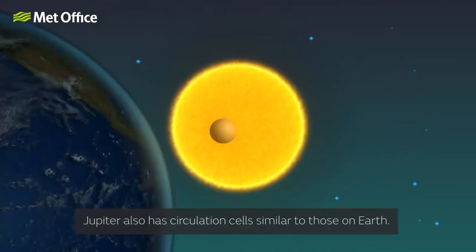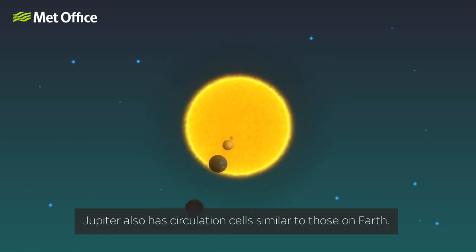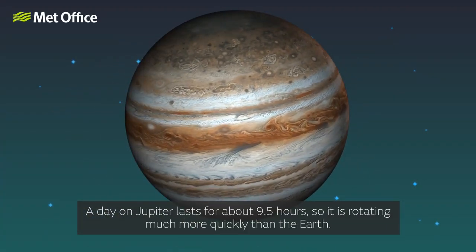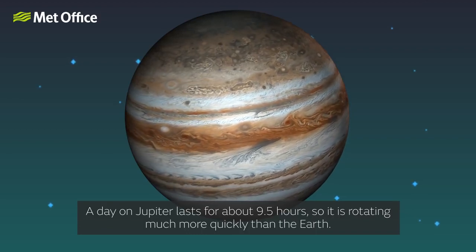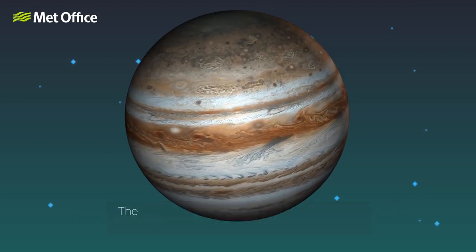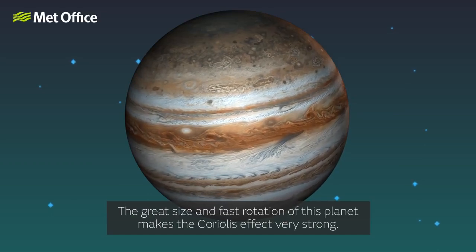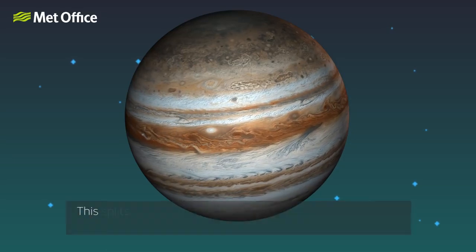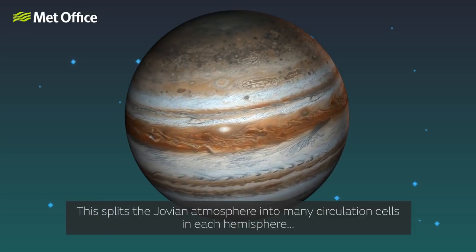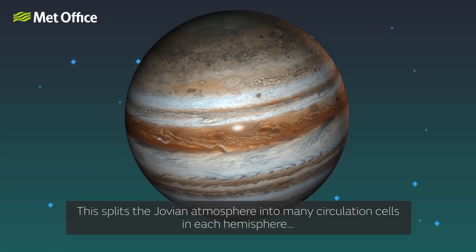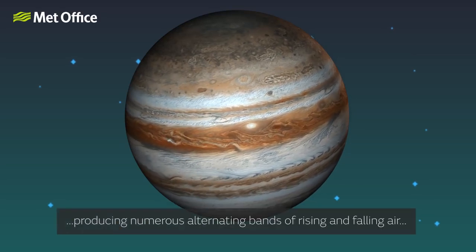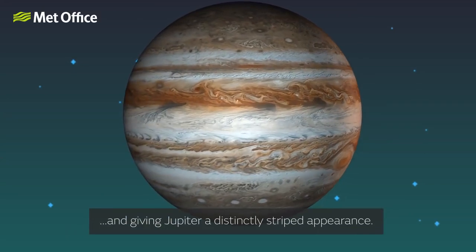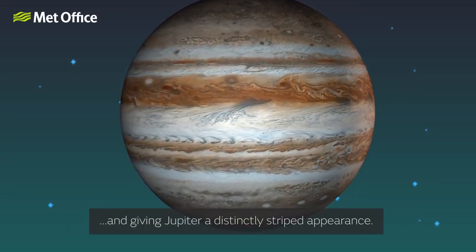Jupiter also has circulation cells similar to those on Earth. A day on Jupiter lasts for about nine and a half hours, so it is rotating much more quickly than the Earth. The great size and fast rotation of this planet makes the Coriolis effect very strong. This splits the atmosphere into many circulation cells in each hemisphere, producing numerous alternating bands of rising and falling air and giving Jupiter a distinctly striped appearance.